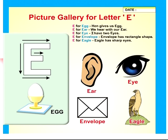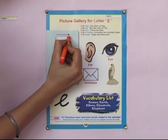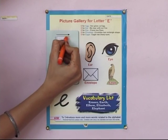Can you see the egg? Yes, and the alphabet E. We will color the alphabet.